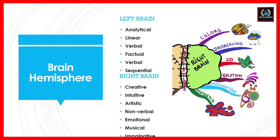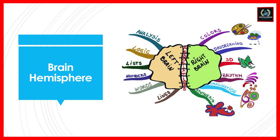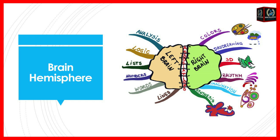When using the right brain, activities include recognizing colors and rhythms, imagination, synthesis, and daydreaming. The left brain, on the other hand, is more towards analysis, logic, lists, numbers, words, and lines. I've given different examples in the brain hemisphere diagram — you can relate to the activities and identify which brain part you use most of the time.